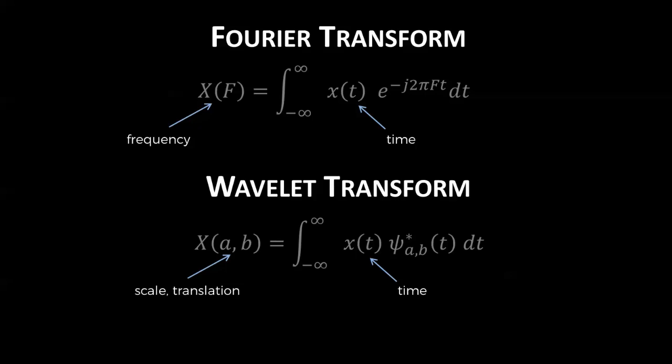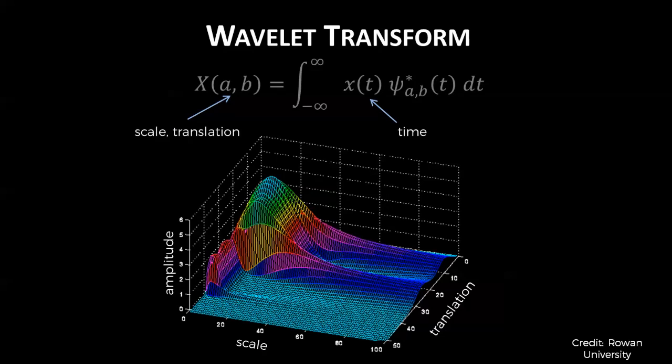This results in a three-dimensional plot of amplitude as a function of scale and translation, which looks something like this. So we know that the Fourier transform outputs amplitude as a function of frequency, but how do we make sense of translation and scale?